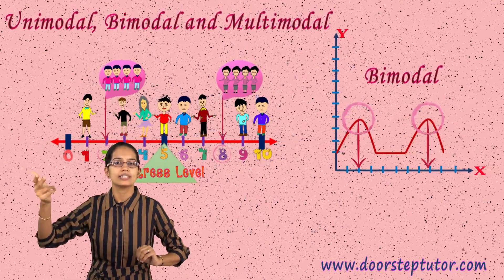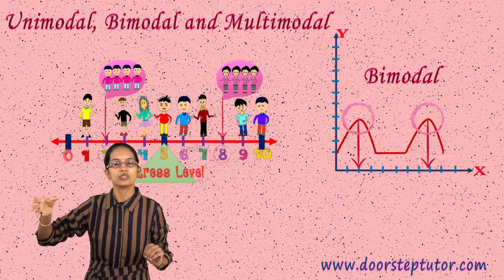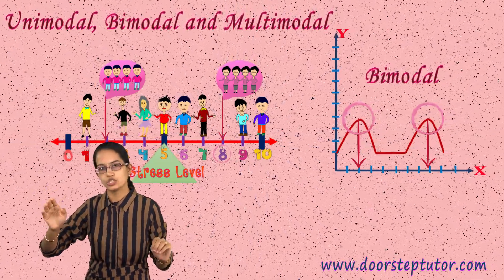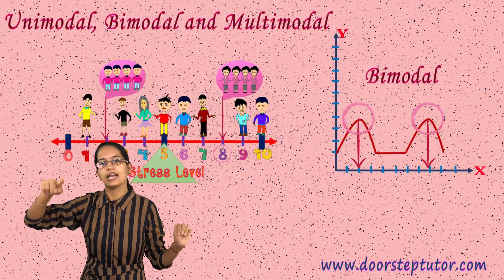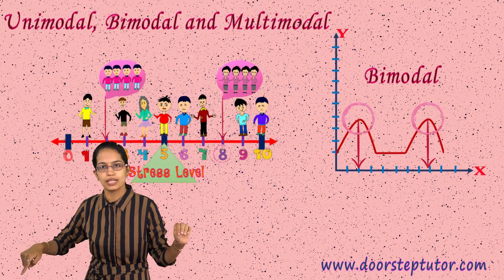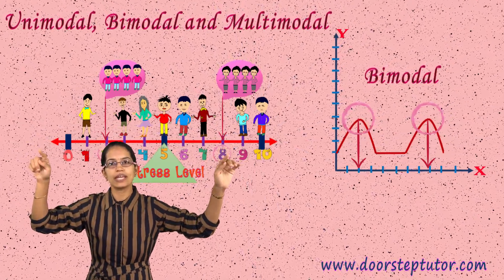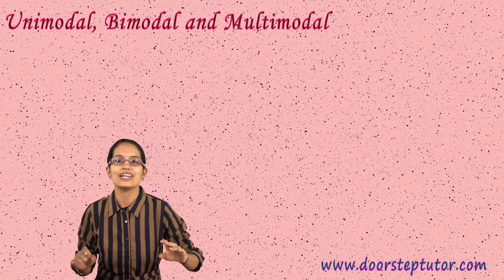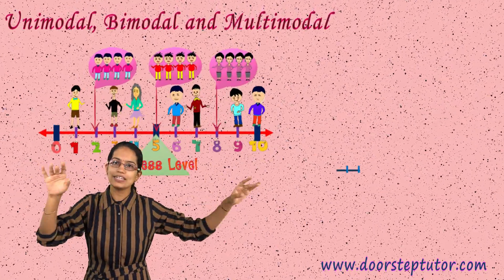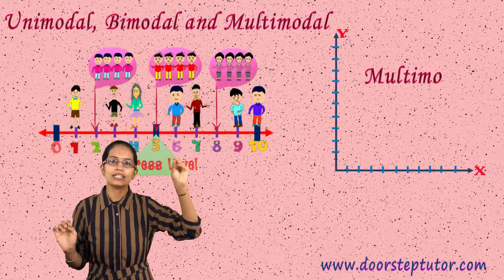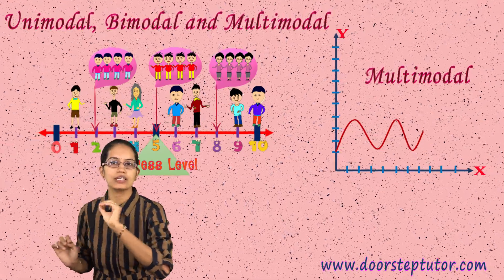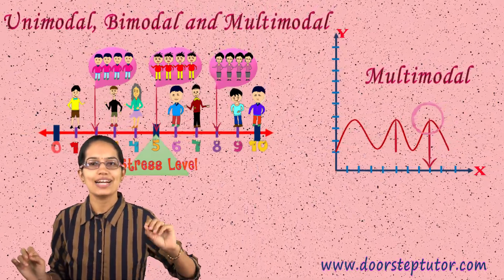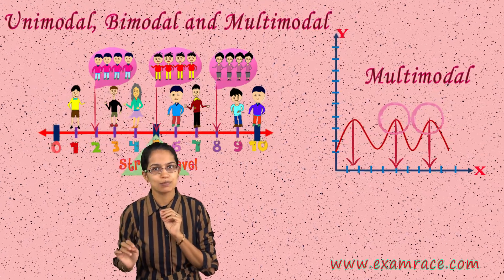Previously there were 2. Now let's consider there are 2 more students whose stress level has decreased and their new stress level is 2. So what happens is there are 2 peaks, and these 2 peaks make it a bimodal distribution. However, if there are multiple peaks — let's say after every 5 or 10 interval — we call it a multimodal distribution.